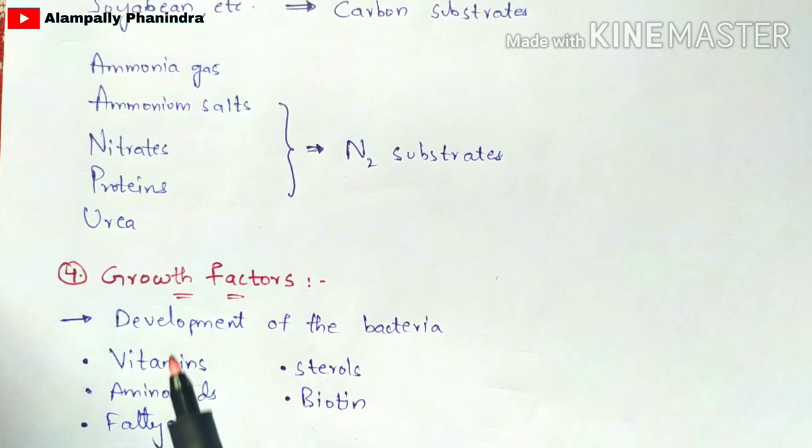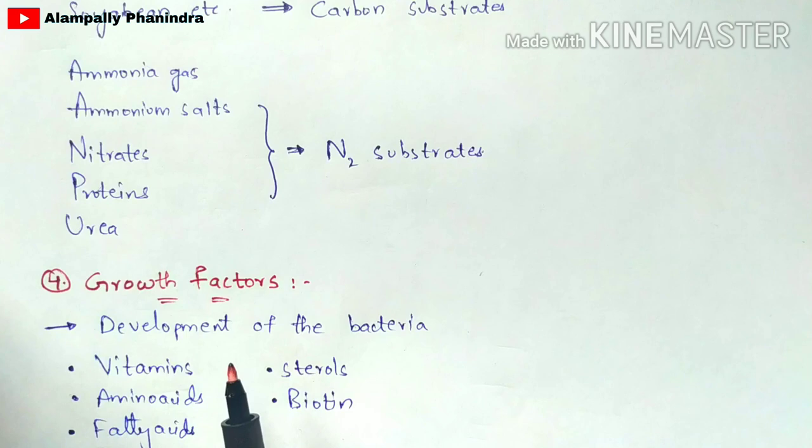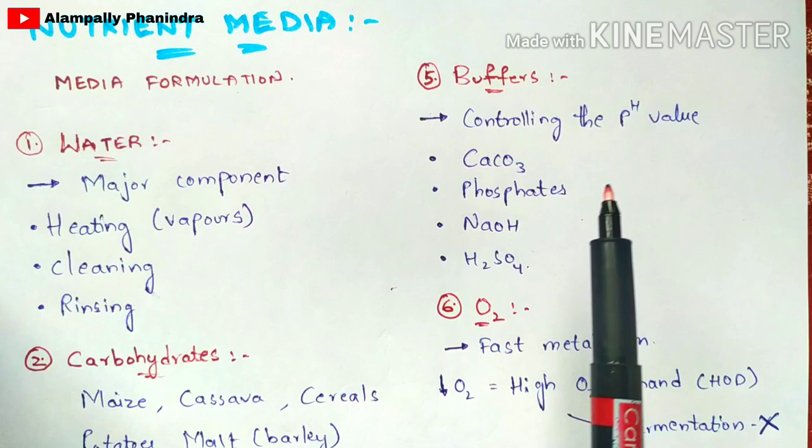The fourth component is growth factors. Growth factors are mainly used for the development of bacteria, since bacteria are used in place of primary metabolites for producing particular organic acids. Growth factors increase the number of bacteria and include vitamins, amino acids, fatty acids, sterols, and biotin.